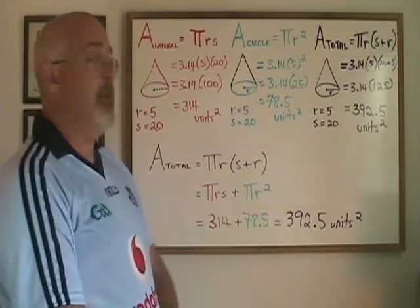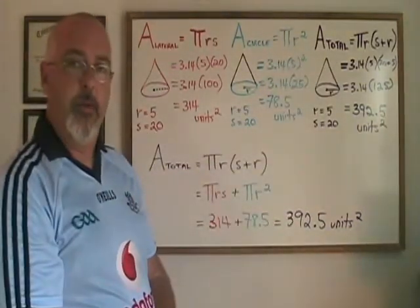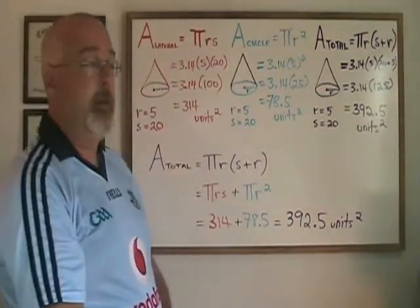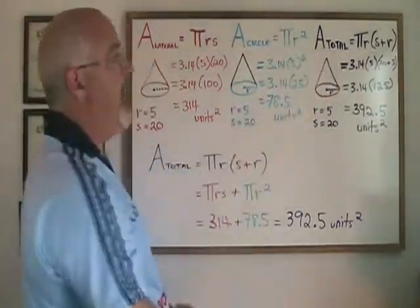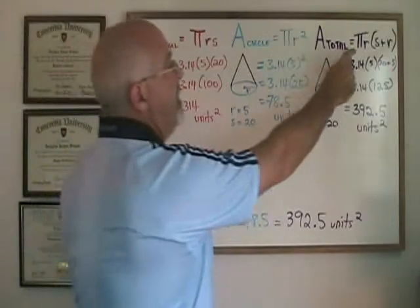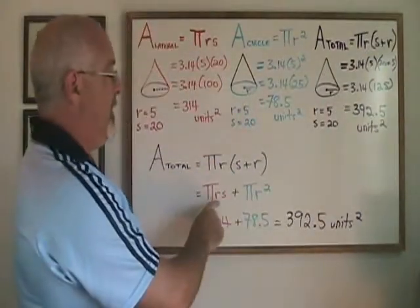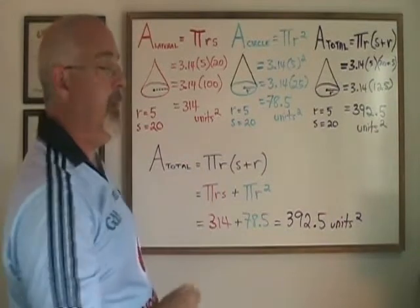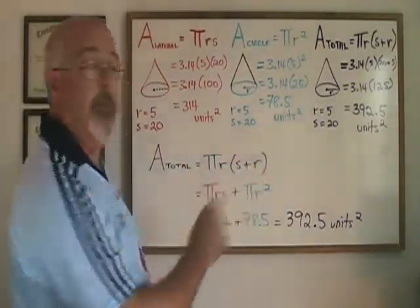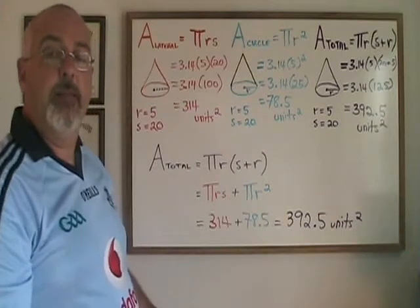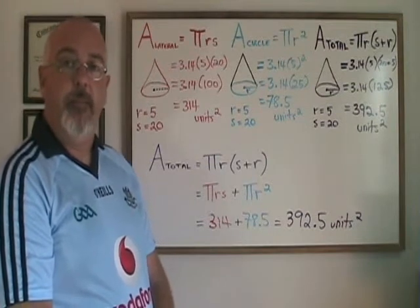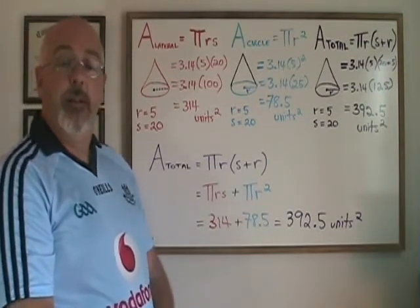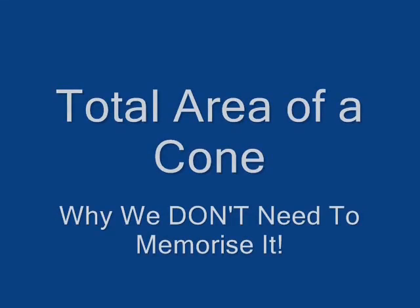So what this means is we don't have to memorize the total area for a cone formula. If we know our lateral area for a cone formula, and if we know our circle area formula, then we can derive this formula whenever we want it. And this formula can be expressed in this form with the bracket, but it can also be expressed in this form: total area is equal to pi r s plus pi r squared, because this means the same thing. This gives us the power to not memorize a complicated looking formula in preparation for an exam. We can derive that formula in the exam when we need it.